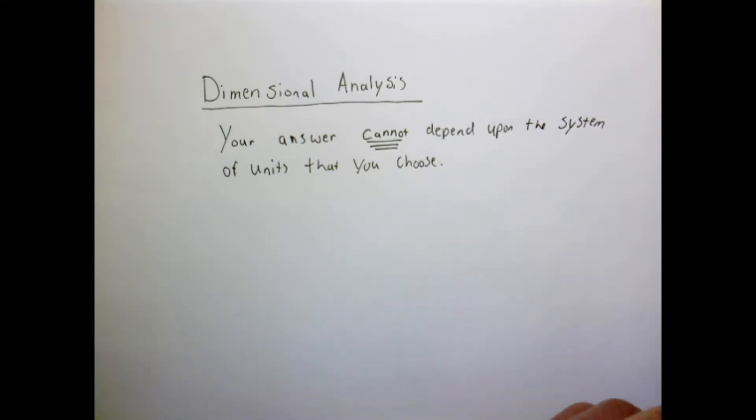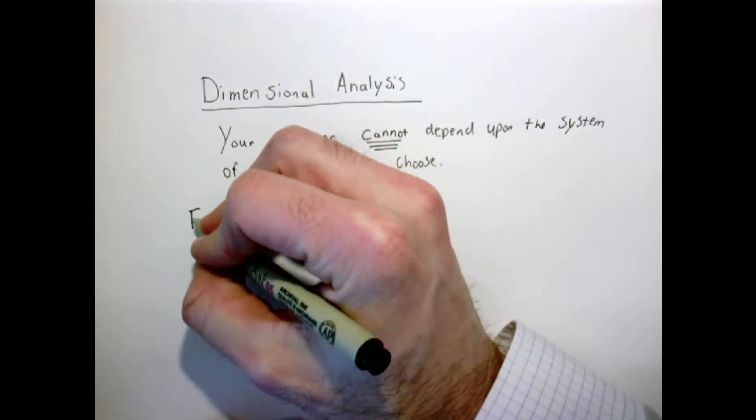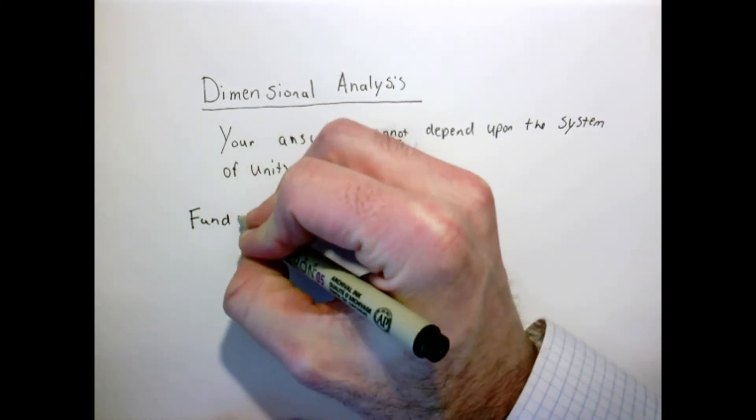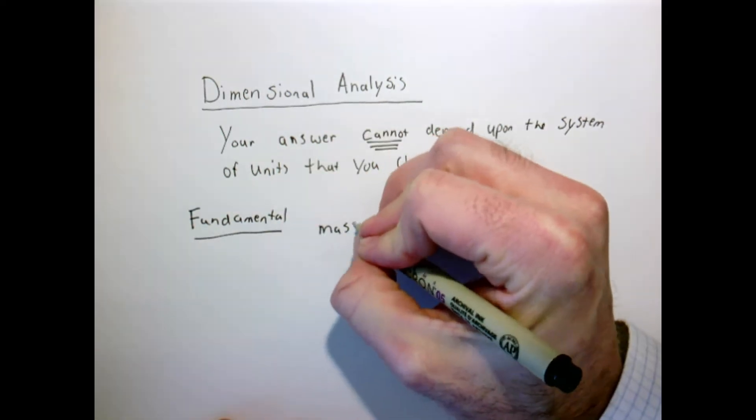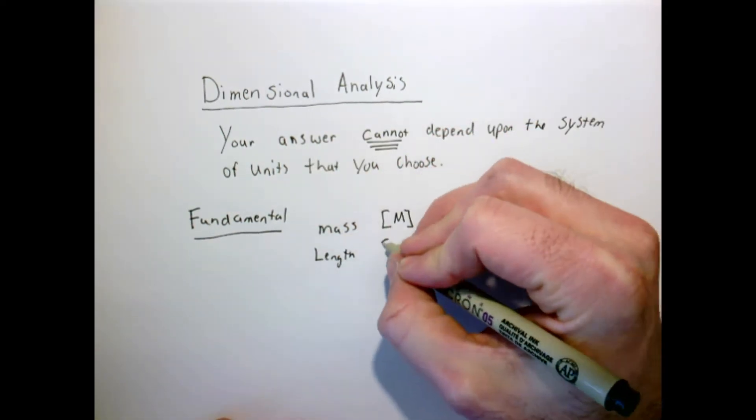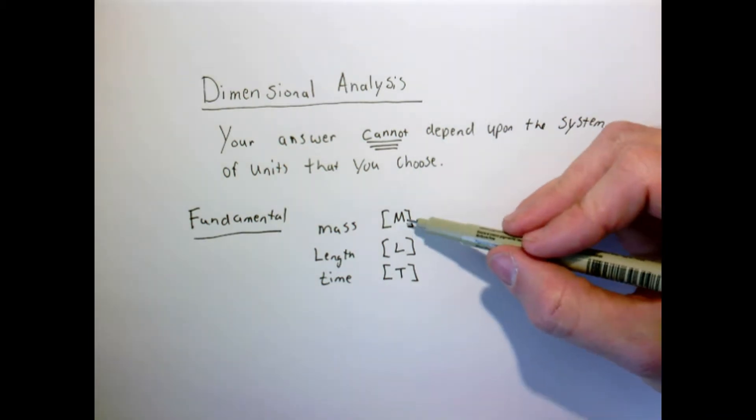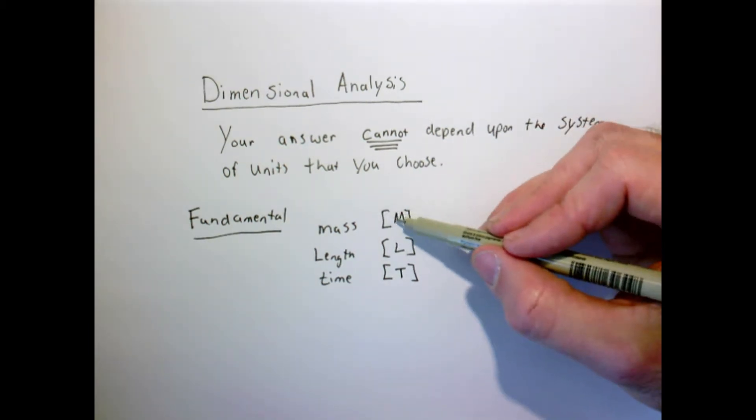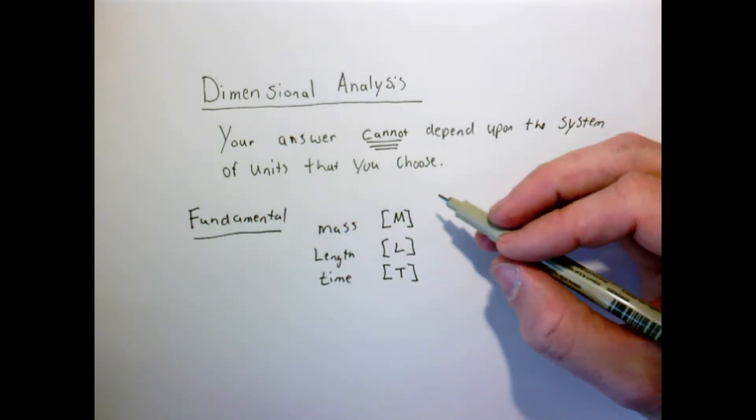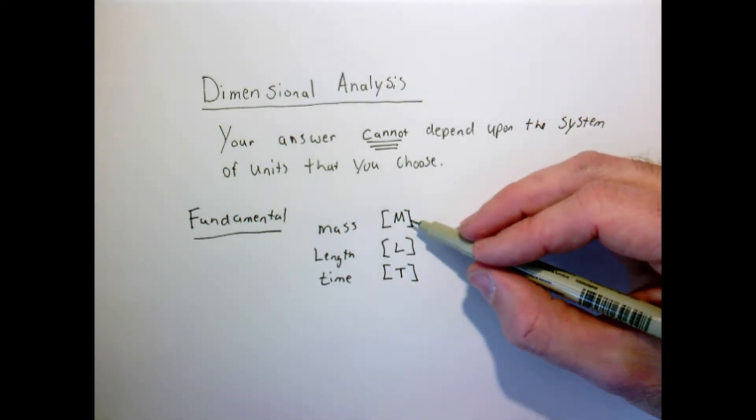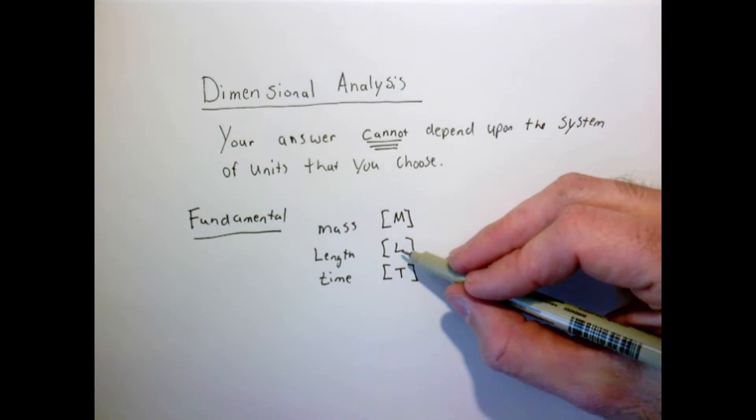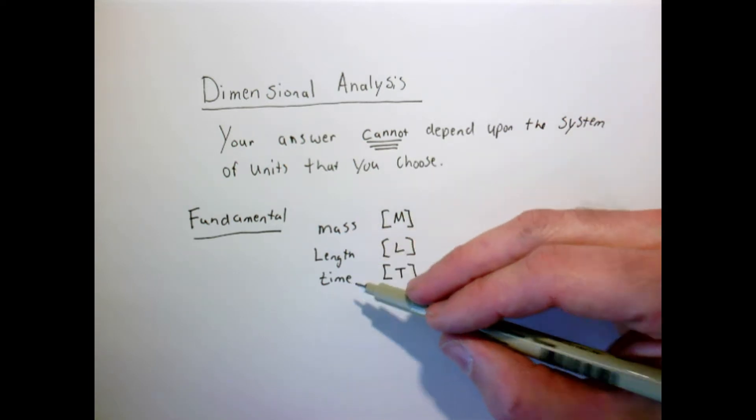So in what proceeds here, we're going to distinguish between a few things that we call fundamental units and derived. Now this distinction is a little bit arbitrary, but what I'll refer to as the fundamental units are mass, length, and time. Because they're all independent of each other. Something has mass which I'll denote by brackets and an M to be the unit of mass. I'm not going to specify there are masses in kilograms or pounds or grams, but we'll just use M, L, and T to denote mass, length, and time.